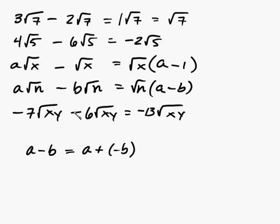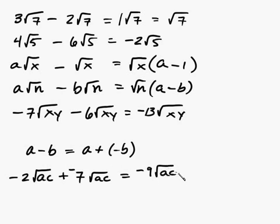And how about this one? Negative 2 radical AC minus 7 radical AC. Radicals are the same. Subtract the coefficients. Negative 2 minus 7 is negative 2 plus negative 7. So that will give you negative 9 and rad AC.